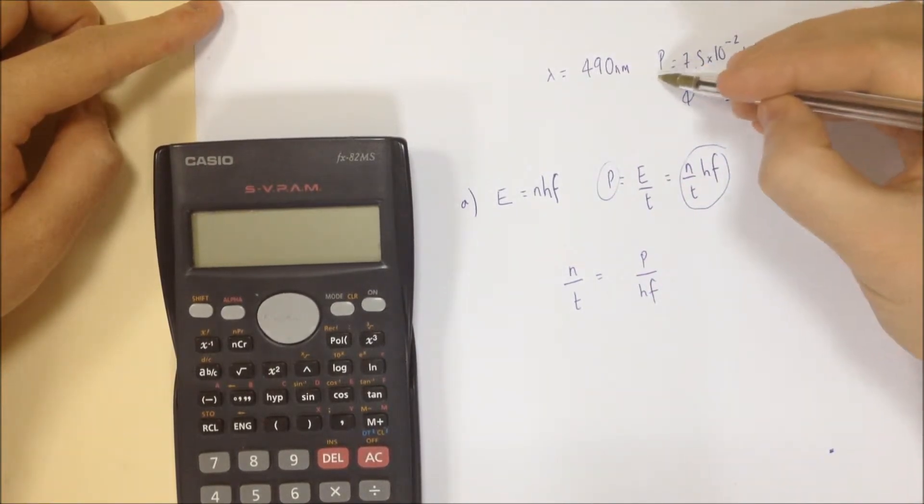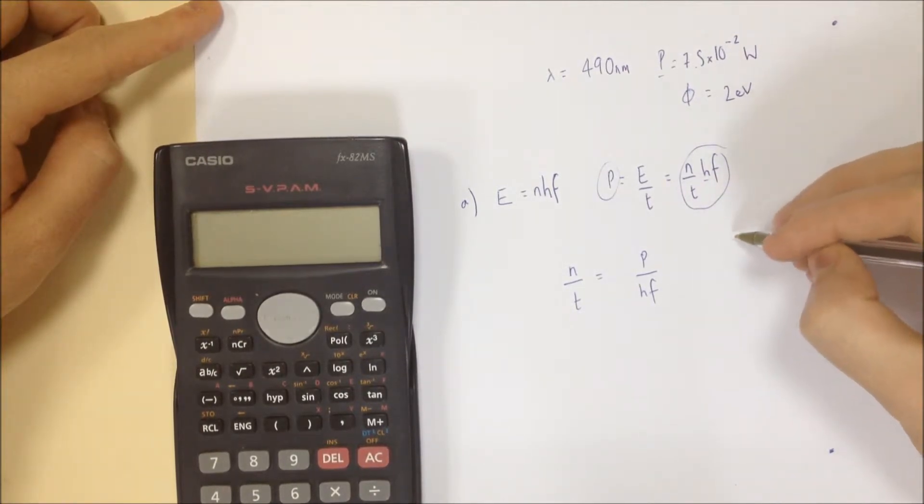which is equal to P over HF. Plug the numbers in. There's your power. There's your H. Your frequency you don't know, so you're going to need to work out the frequency.